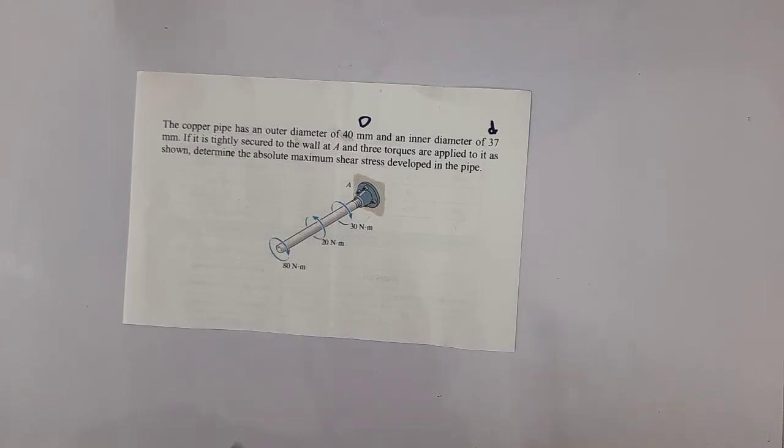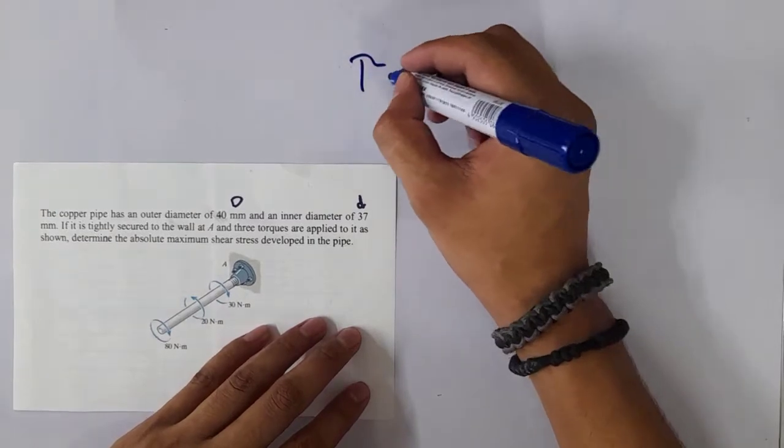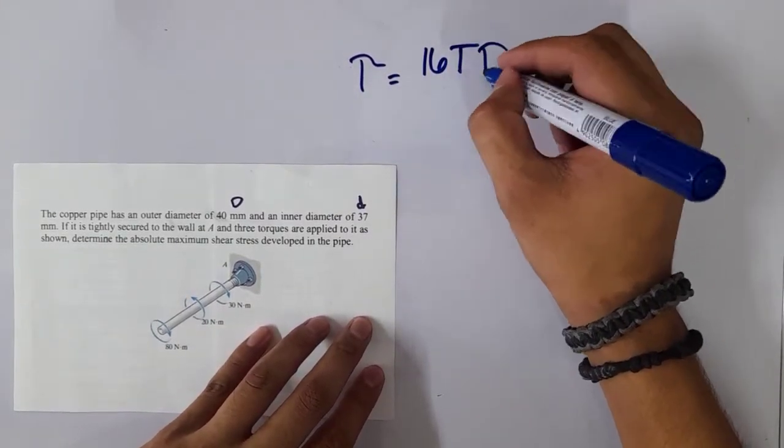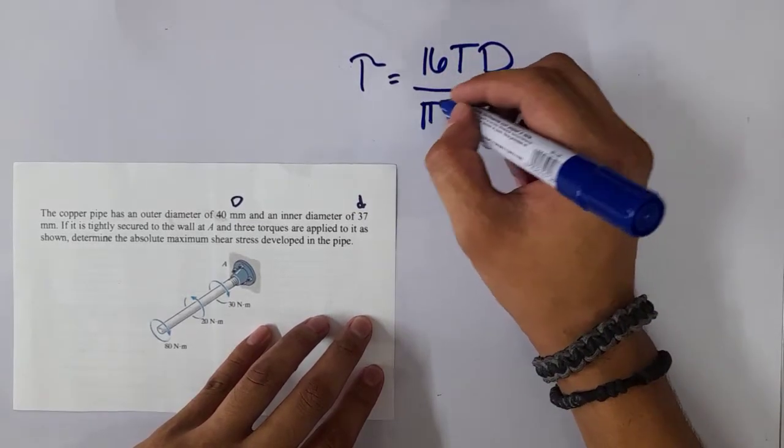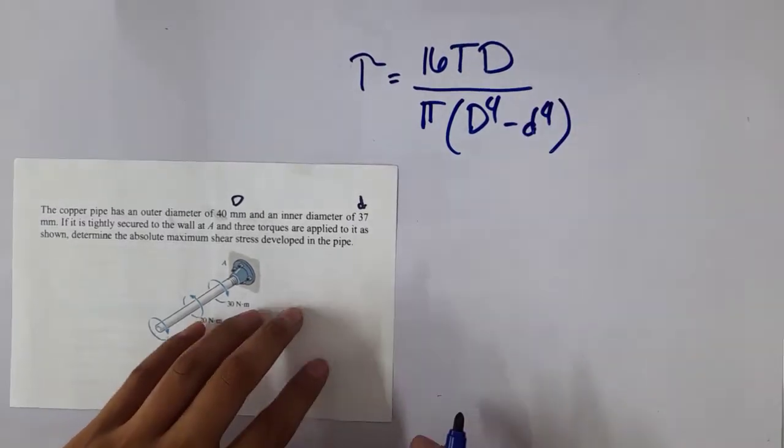So for hollow pipes, our shear stress equation is like this: we have 16TD divided by π(D⁴ - d⁴).